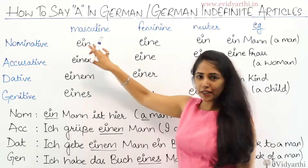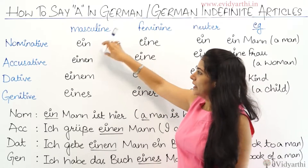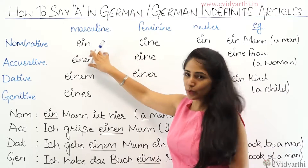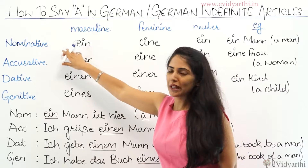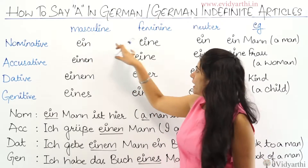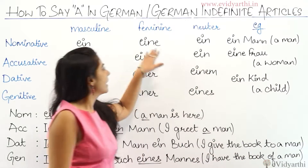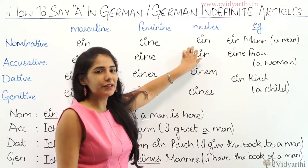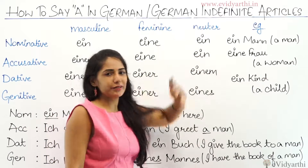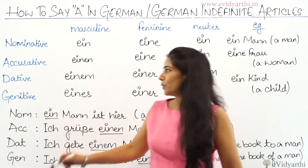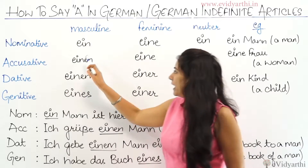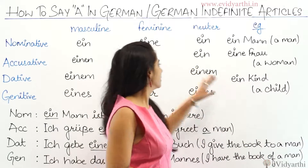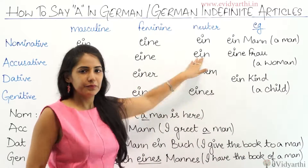The indefinite article 'ein' is used for masculine nominative. For feminine it's 'eine'. 'Ein' for neuter. In the accusative case: 'einen' for masculine, 'eine' for feminine, and 'ein' for neuter.